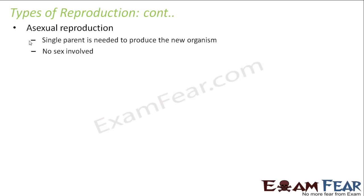Asexual reproduction was the primitive mode of reproduction — it came before the sexual mode. In this mode, the daughter organism is exactly identical to the parent. We often use the word 'daughter' for the new organism produced and 'parent' for the organism that gave birth to it. There is no chance of variation because only one organism gives birth, so whatever traits it has are exactly copied.